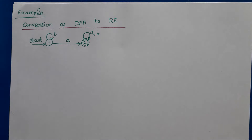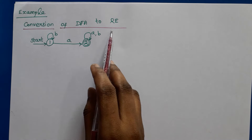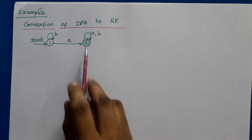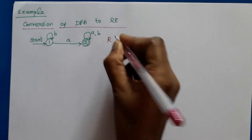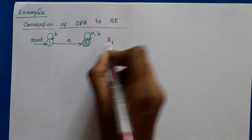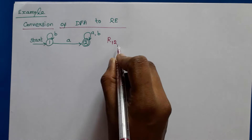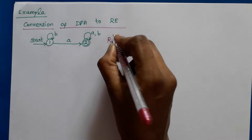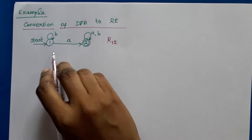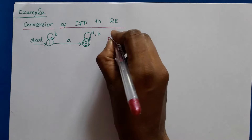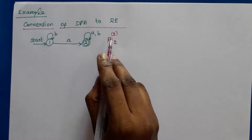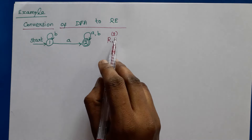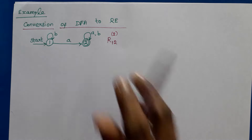Hello everyone. In this lecture we are going to see an example for conversion of DFA to regular expression. We are going to convert this DFA to regular expression. The start state is 1, final state is 2, and the total number of states k cannot be greater than the number of states of the DFA, which is 2. The final answer must be r12 to the power 2.